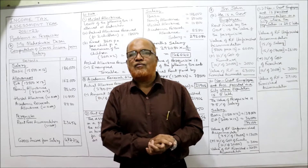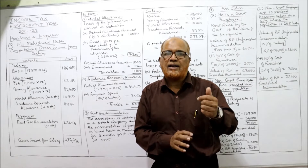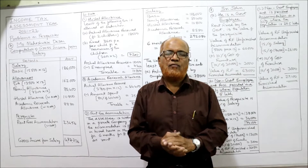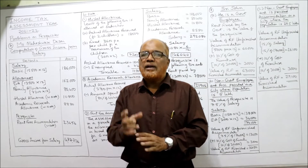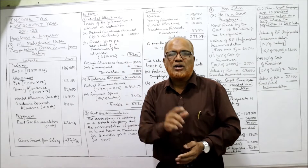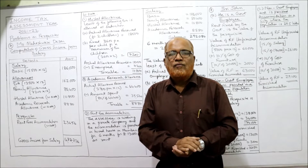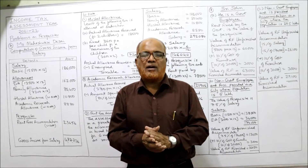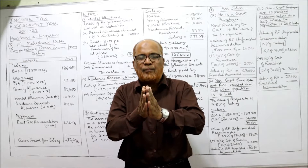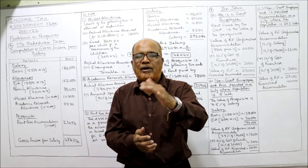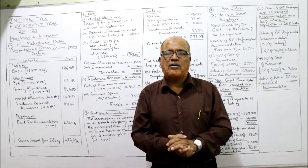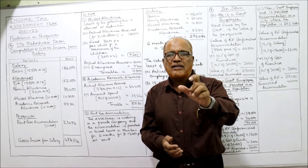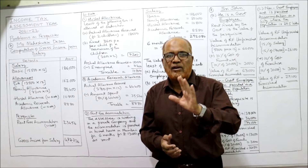To calculate furnished accommodation value, first calculate the value of unfurnished accommodation, then add 10% of the cost of furniture provided or the hire charges paid by the employer. For calculating rent-free accommodation, employees are classified into government and non-government employees.